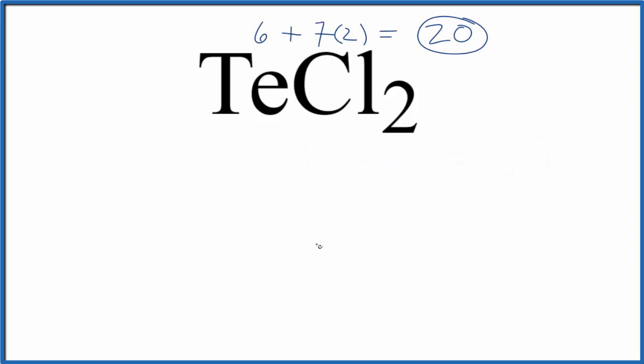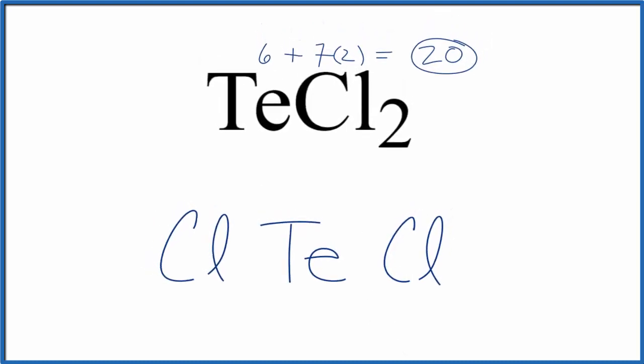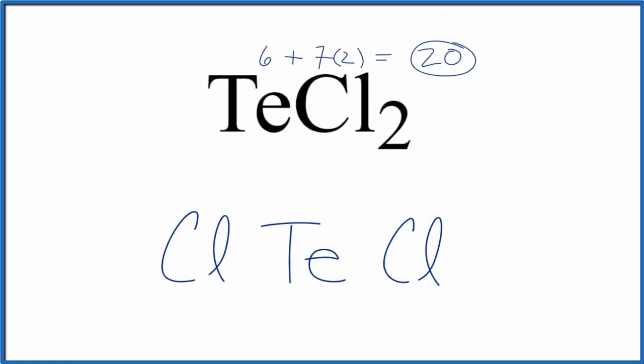We'll put the least electronegative element in the center, that's the Te, and then the chlorine atoms on either side. Next we'll put a pair of electrons between the atoms to form our chemical bonds. So we've used four, remember we have a total of 20.